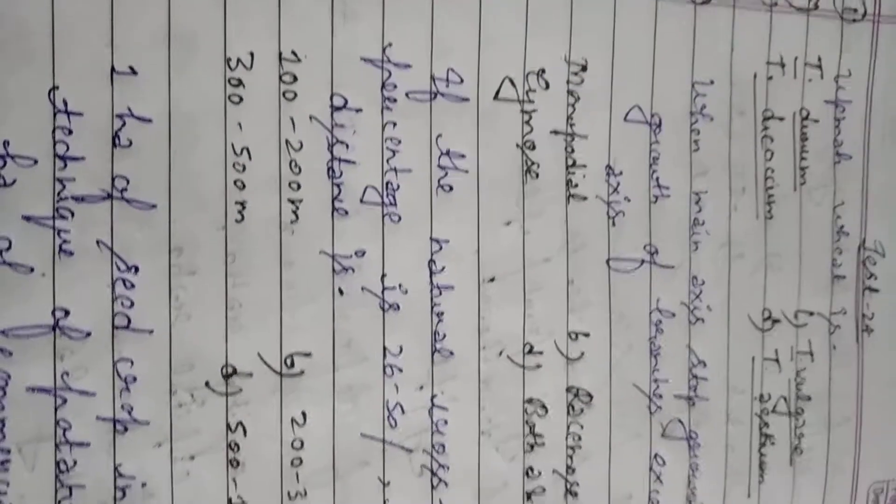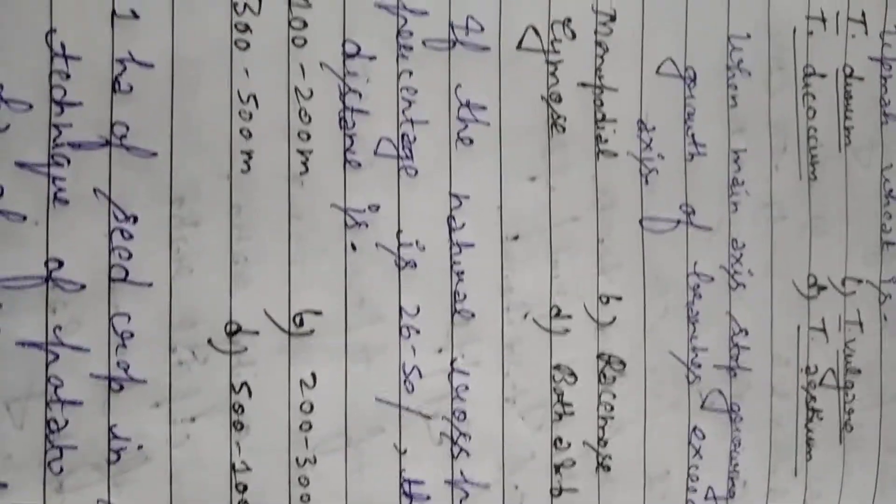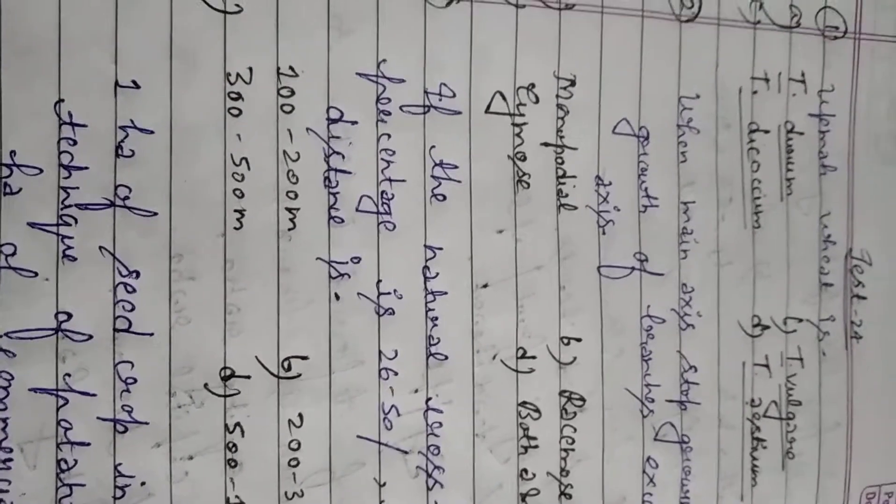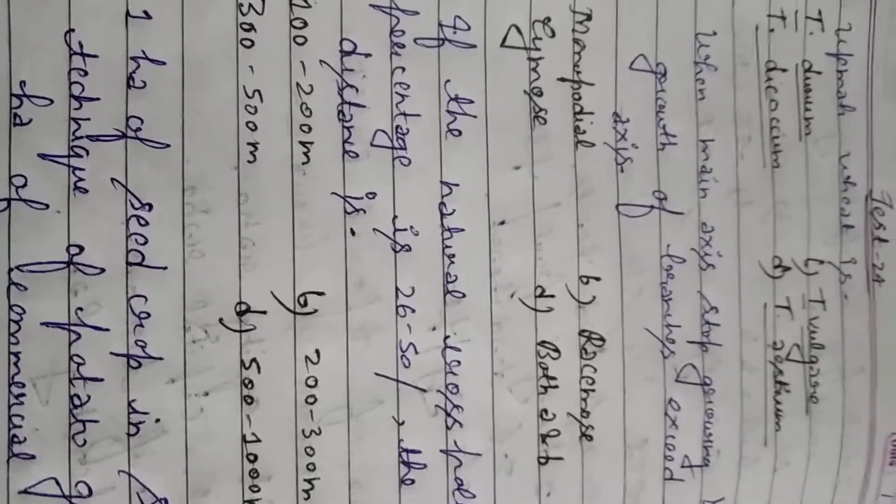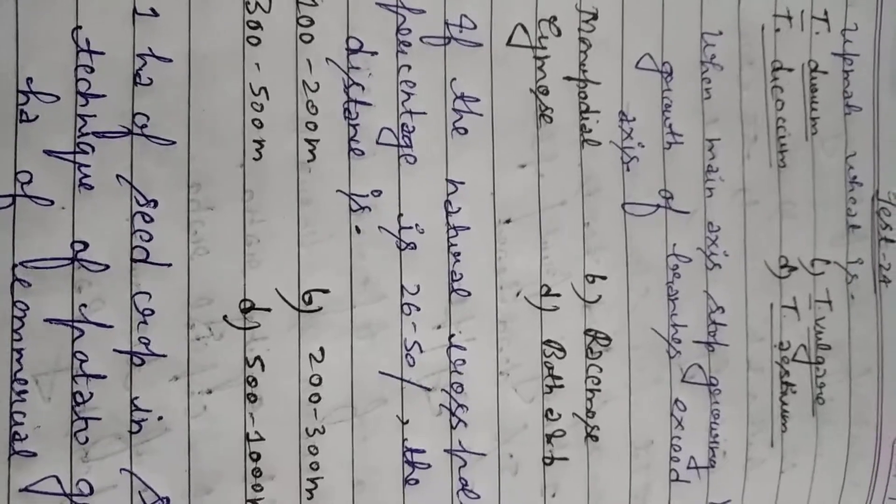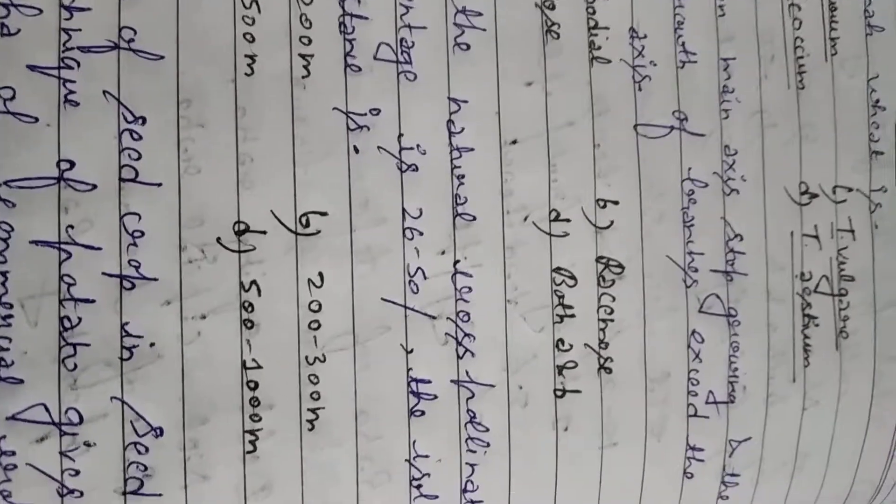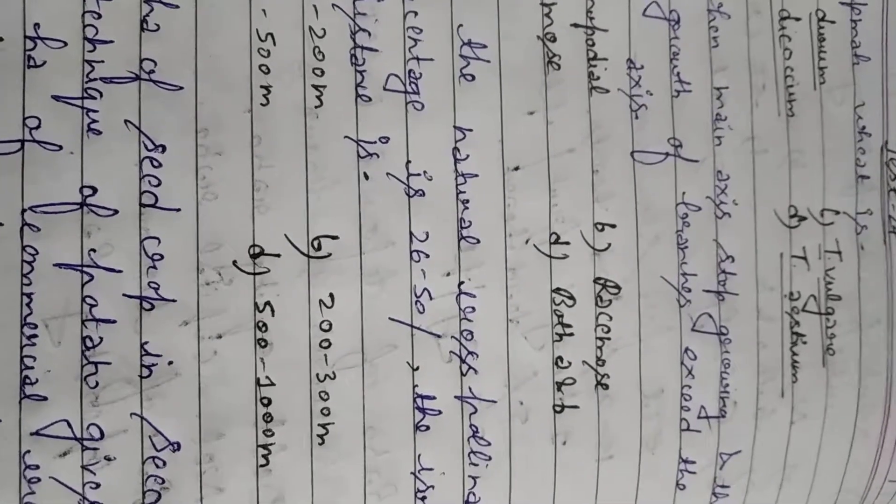Student next question again from agronomy. When main axis stops growing and the growth of branches exceed the main axis. Option A monopodial, Option B racemose, Option C cymose, Option D both A and B. You have to tell what is this condition called. When main axis stops growing and growth of branches exceed the main axis.